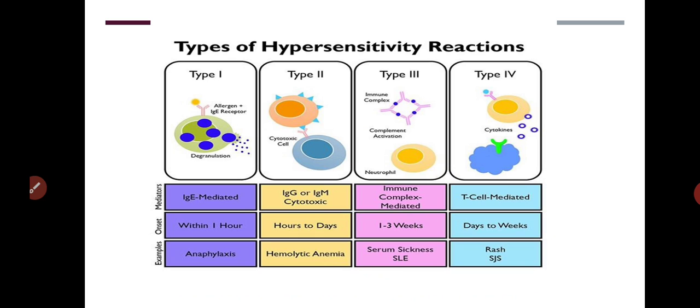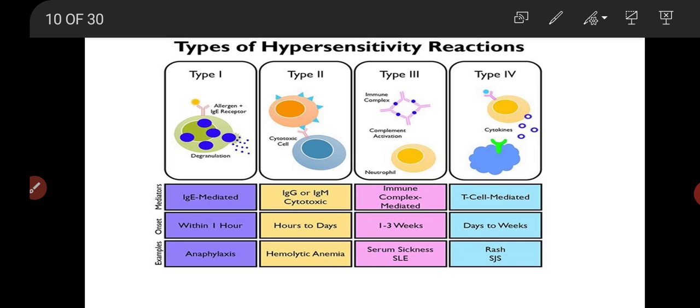When our body generates an immune response but that very response causes intolerable reactions that harm our own body — that is hypersensitivity. There are four types: Type 1 involves IgE antibody, occurs within one hour, is very rapid, and causes anaphylaxis. For example, an allergy to a honeybee sting is anaphylaxis — that is Type 1 hypersensitivity. IgE causes neutrophils and granulated cells to release toxic granules, causing the reaction.